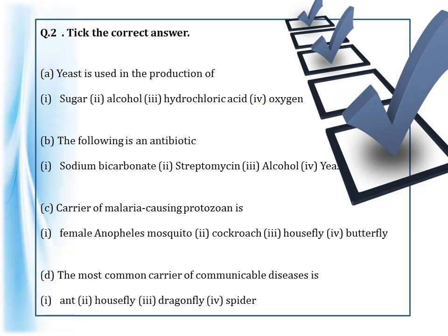The second question is tick the correct answer. Yeast is used in the production of — sugar, alcohol, hydrochloric acid, or oxygen? The answer is alcohol. Yeast is used in the production of alcohol. The sugar present is converted by yeast, and this process of conversion of sugar into alcohol is known as fermentation.